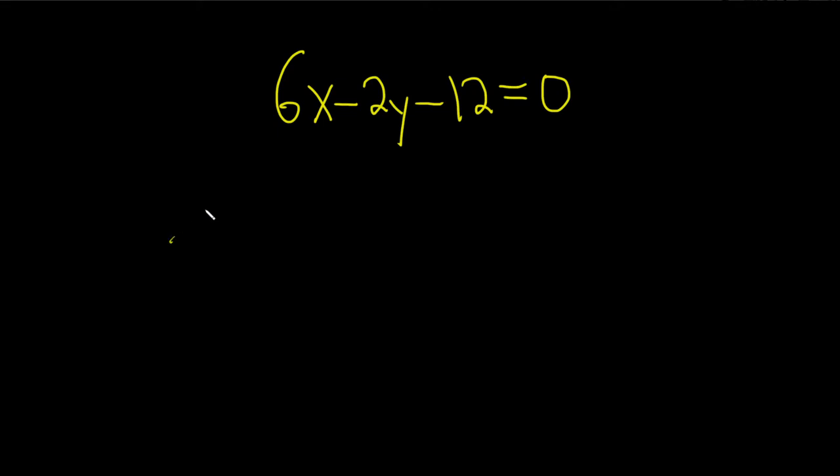So how this works is you basically set x equal to zero, you solve for y, and then you set y equal to zero and you solve for x. So let's focus first on the x-intercept.